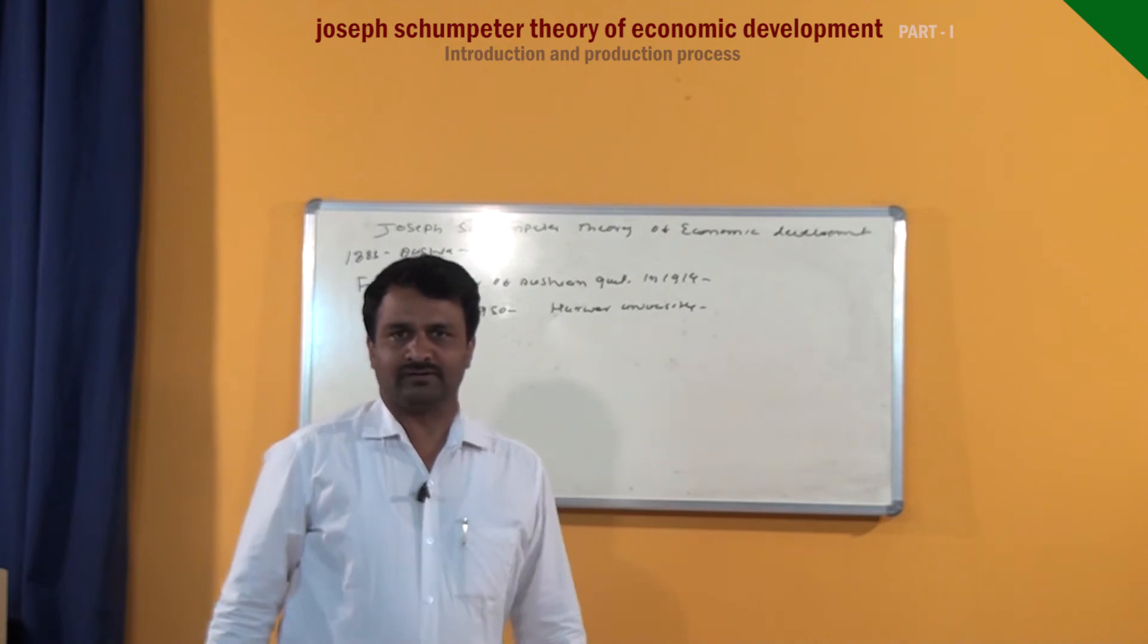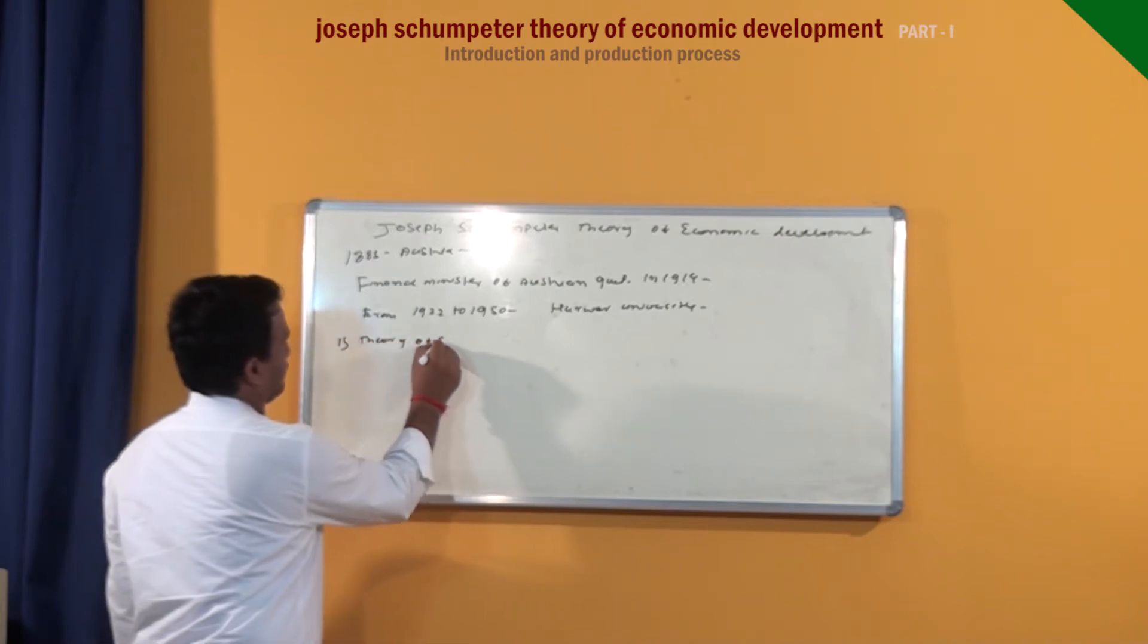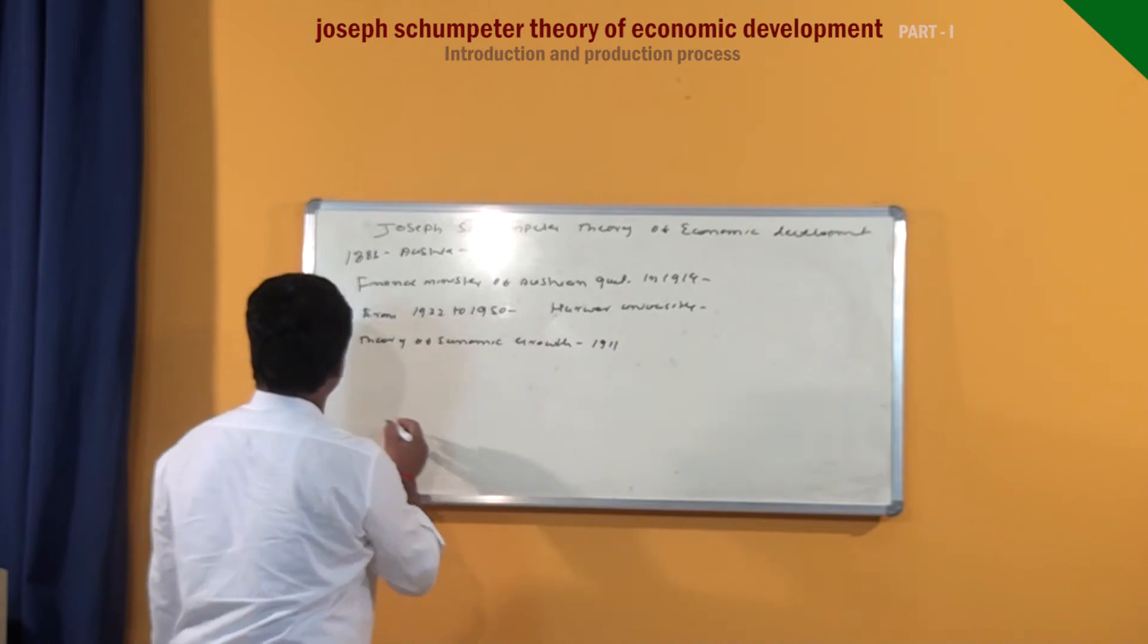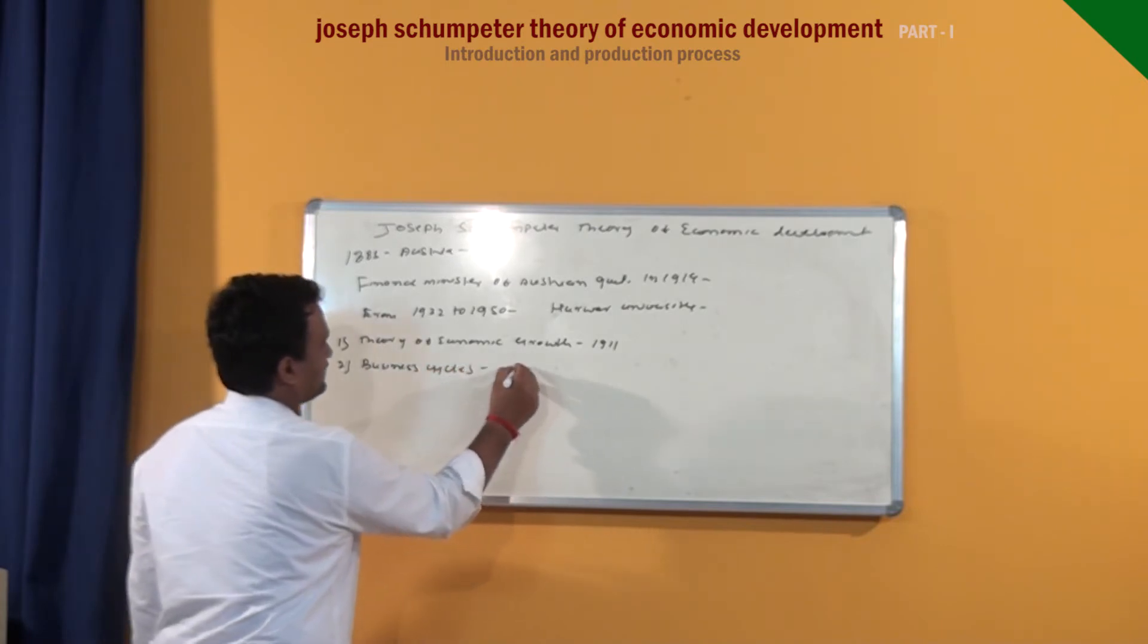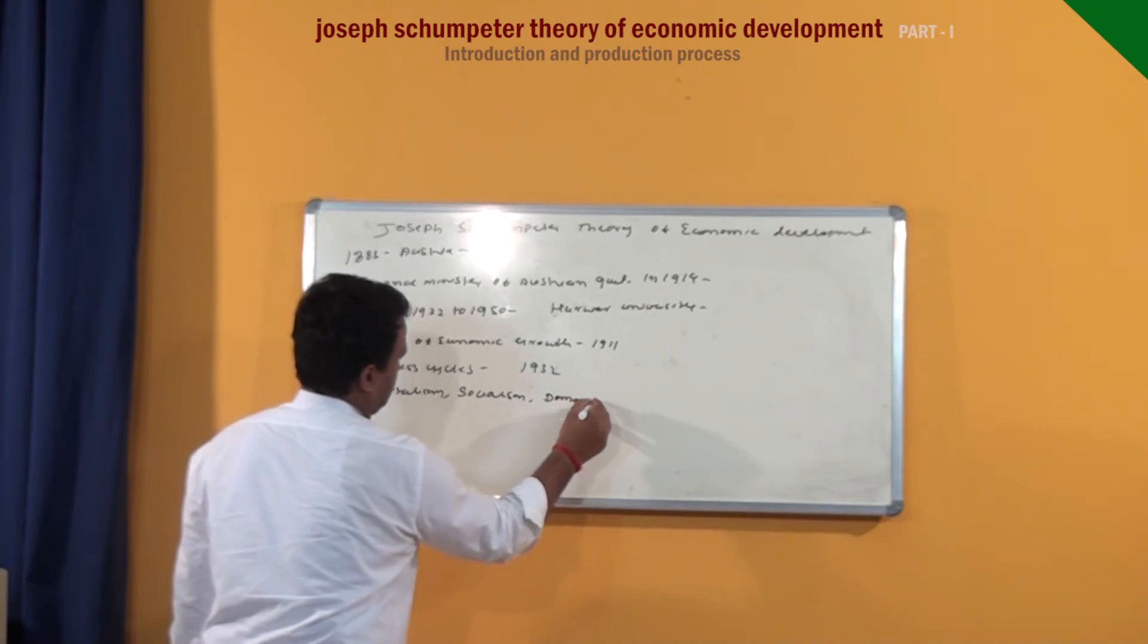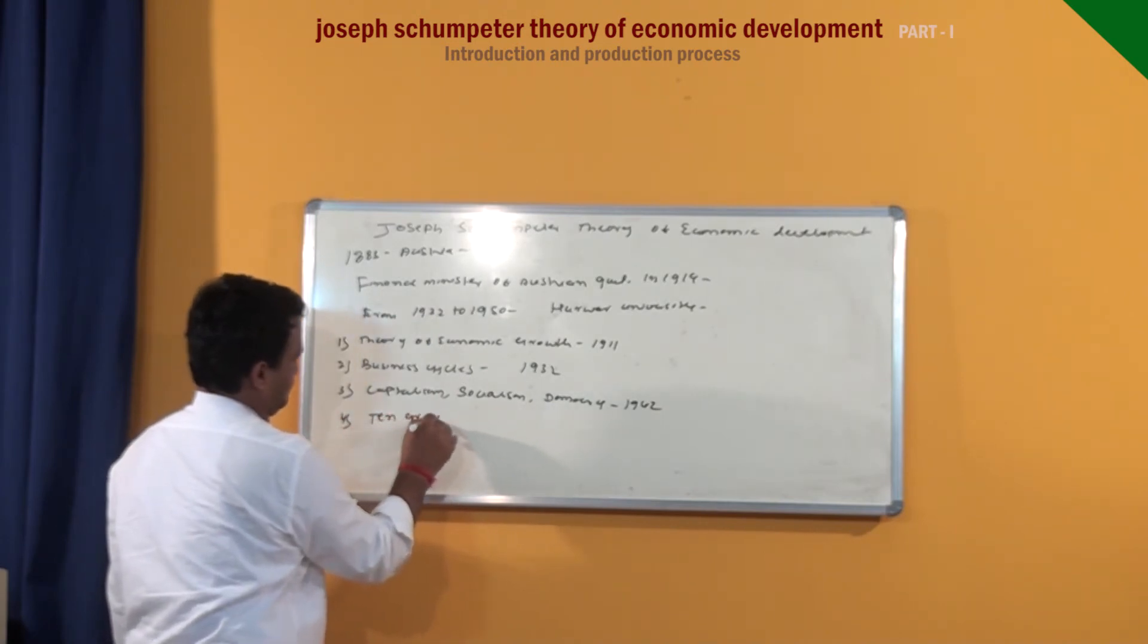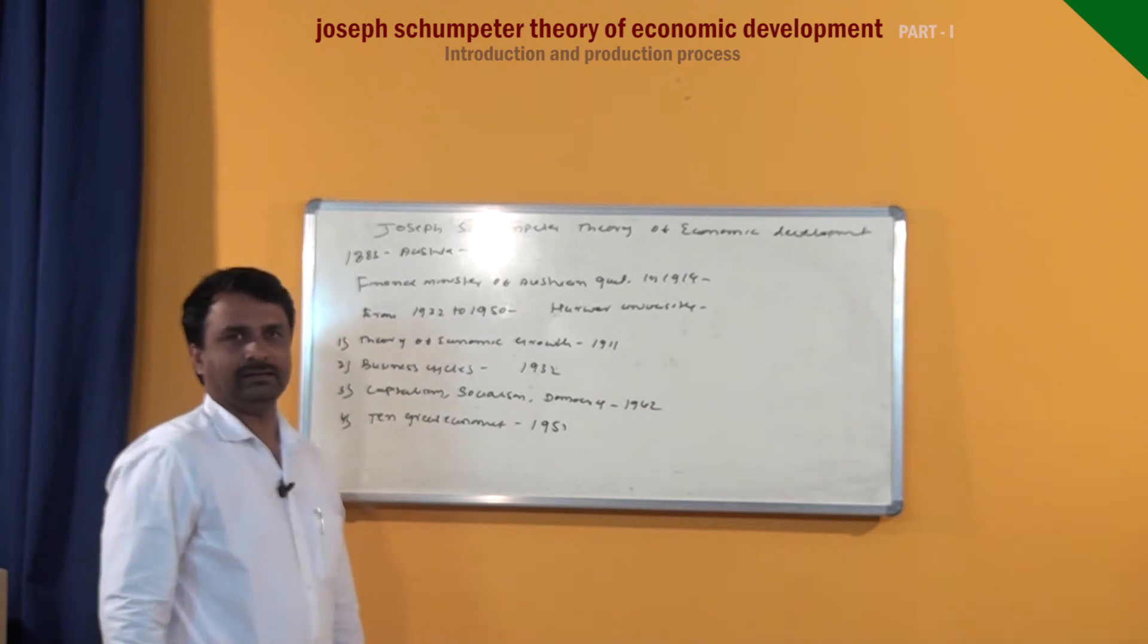He contributed several works. His famous works are Theory of Growth, published in 1911; Business Cycles, published in 1932; Capitalism, Socialism, Democracy, published in 1942.